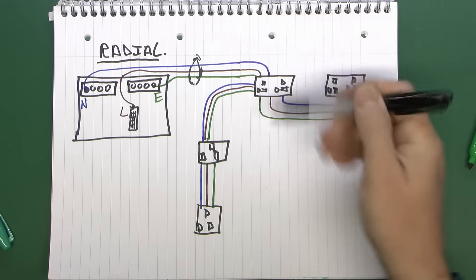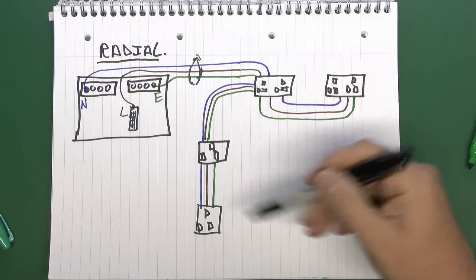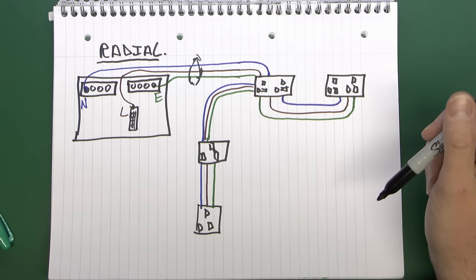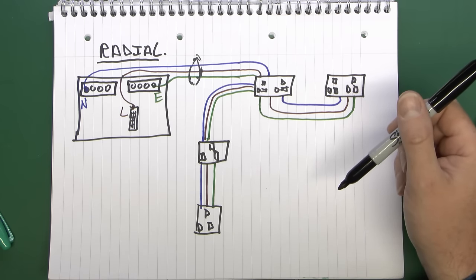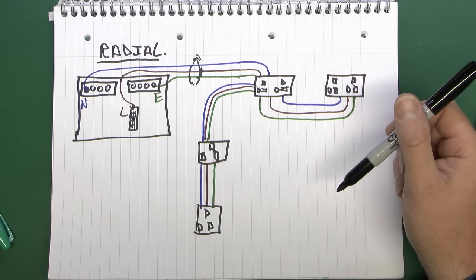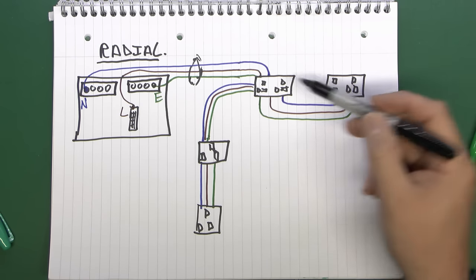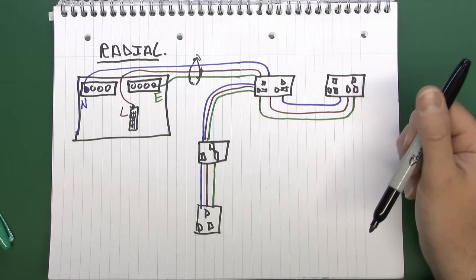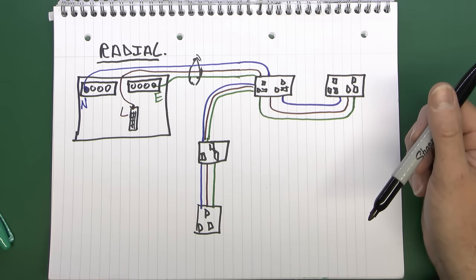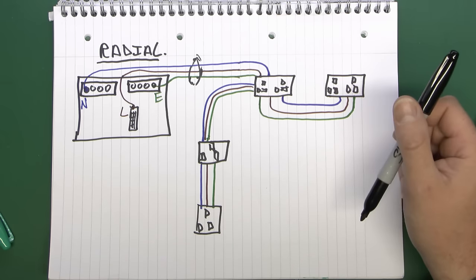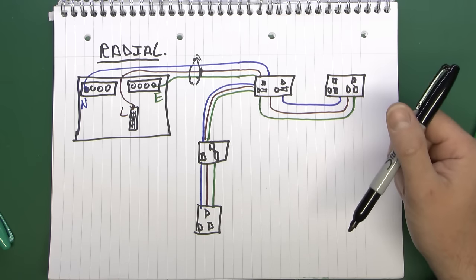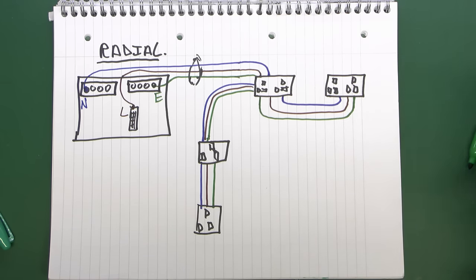This was just an example with socket outlets, but again most circuits are actually radials — apart from ring circuits, which are completely different and we'll deal with those another time. Another common type of circuit typically used for radials are the ones that supply cookers and electric showers. The only difference there is that they generally only have one item of equipment at the end, rather than several sockets.